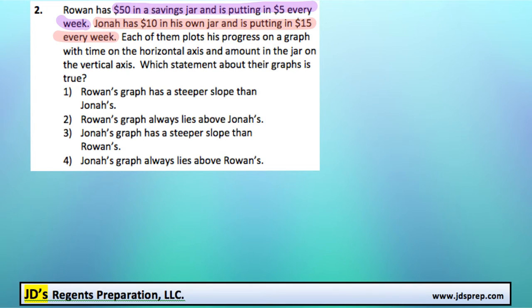And so they're each going to plot their progress on a graph with time on the horizontal and the amount of money in the jar on the vertical. And we need to find out which one of these four statements is true. So let's go ahead and try to do a rough graph of these and see what happens.